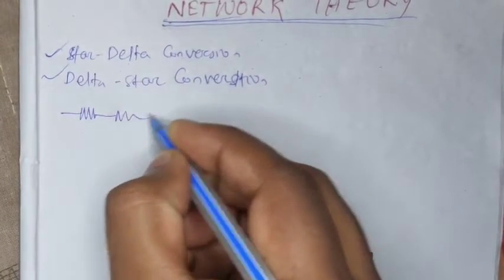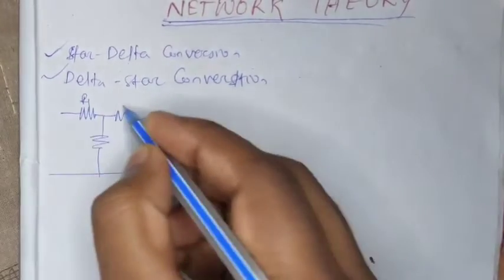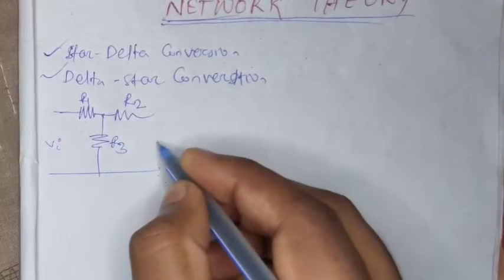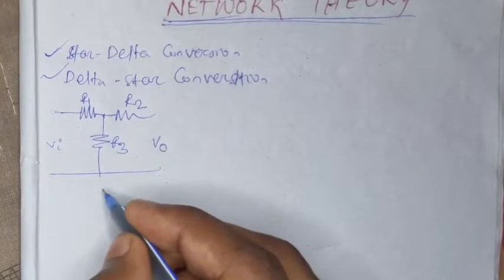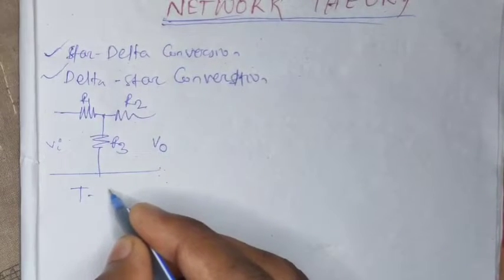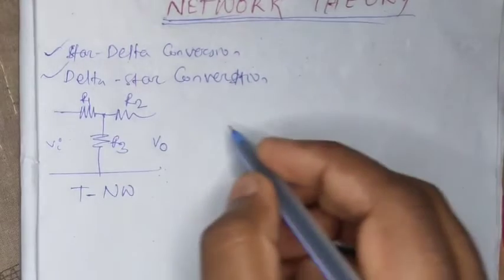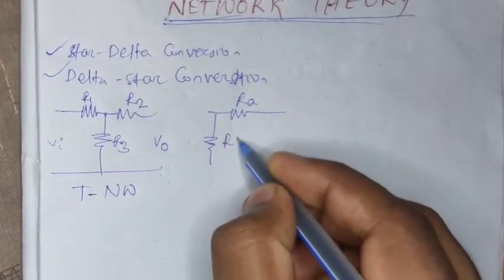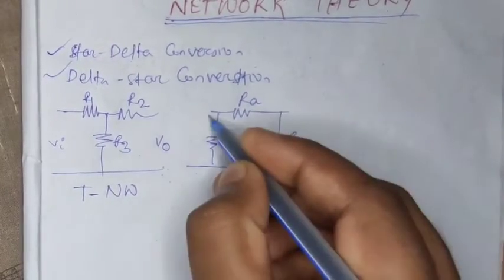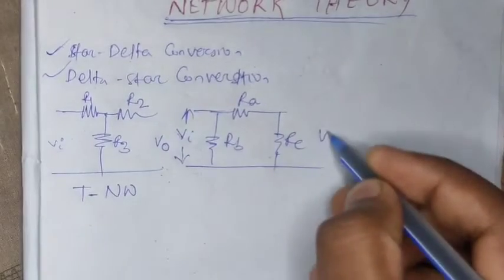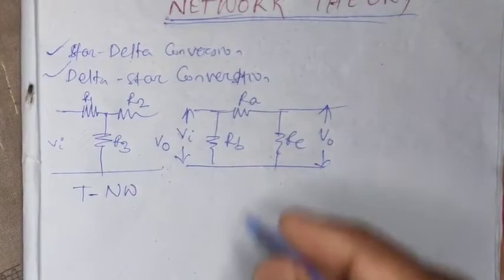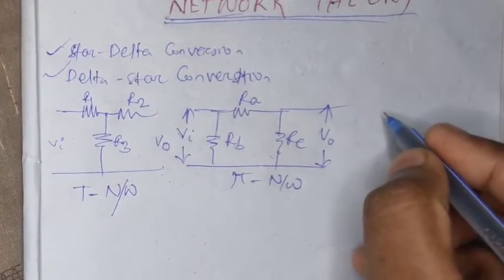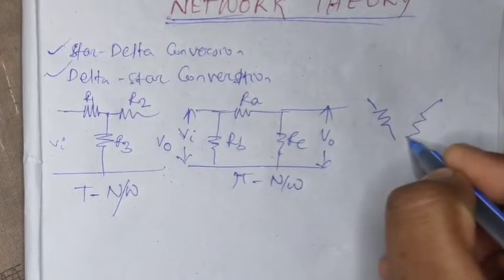This is the T-model of the network. The resistances R1, R2, and R3 are connected to this network, where Vi is the input voltage and Vo is the output voltage. This figure looks like a T shape, so it is called a T-network. Another network is the Pi-network, where resistances Ra, Rb, and Rc are connected in a parallel manner, with Vi as input voltage and Vo as output voltage. It is called a Pi-network because of its Pi-like structure.